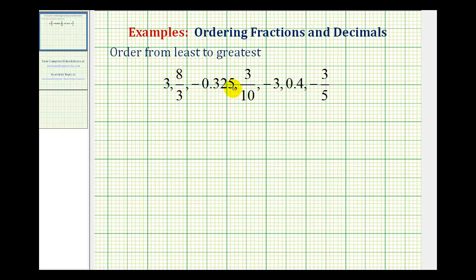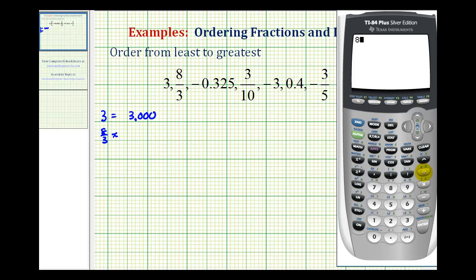And since this decimal here has three decimal places to the right of the decimal point, we'll write every number with three decimal places. So for three we'll write it as 3.000. For eight-thirds we'll convert this to a decimal by dividing eight by three. And we'll round this to three decimal places, so it's going to be approximately 2.667.